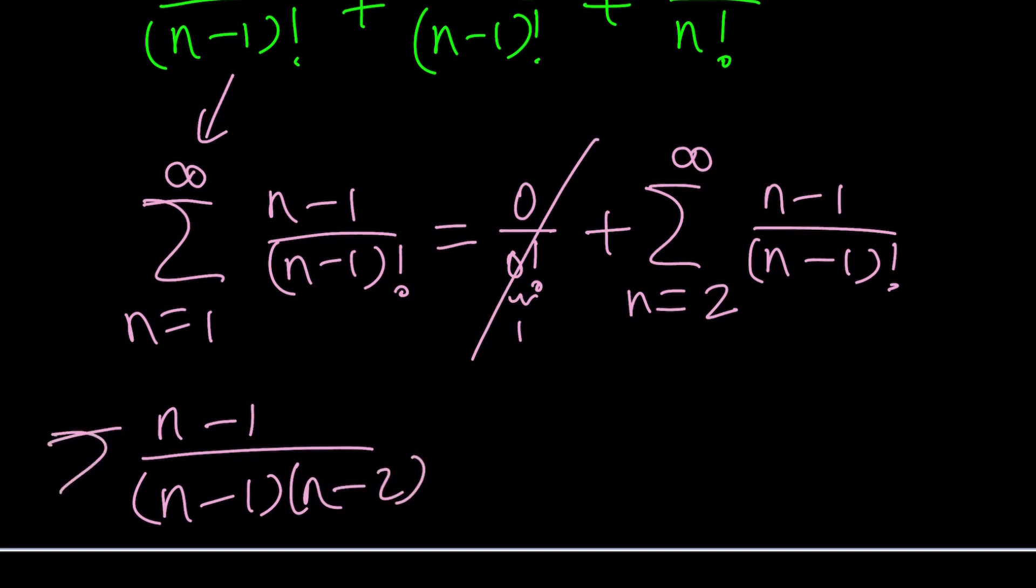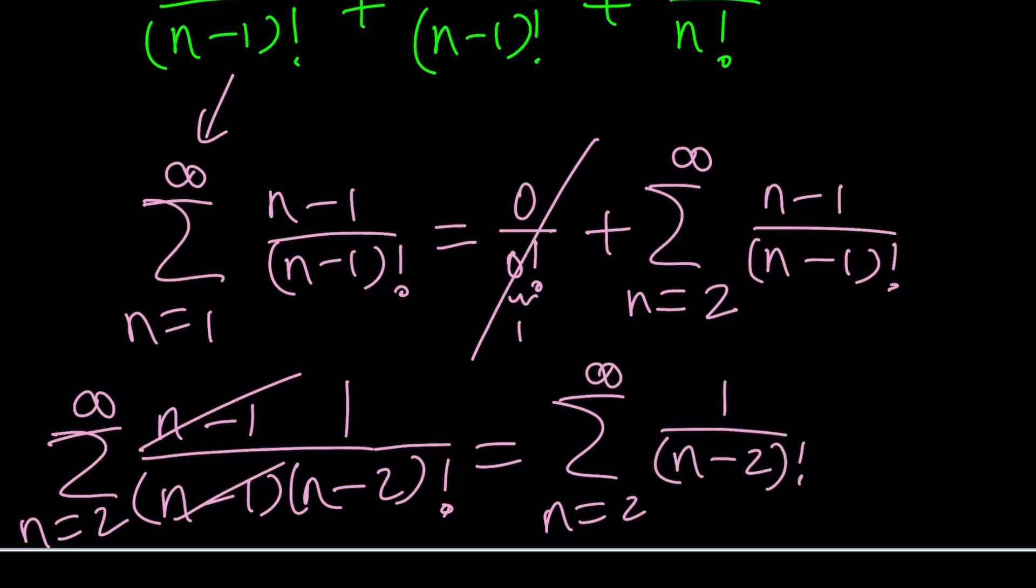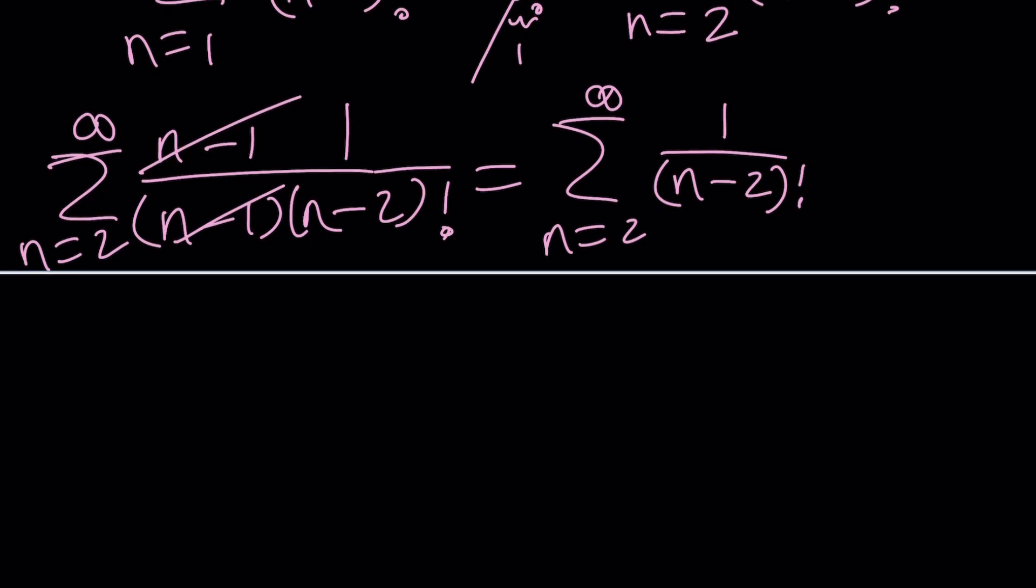Because the index starts at 2, we already eliminated n equals 1, and now this is all good. So we got n equals 2 to infinity, 1 over (n-2) factorial. You got to be very careful about these sums. So this is what we have so far: we have n equals 2 to infinity, 1 over (n-2) factorial.